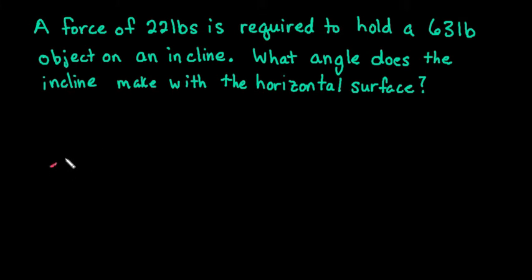The first thing we want to do is draw a picture to represent our incline surface. Our incline surface would be the hypotenuse of a right triangle. So we're trying to find this angle down here. I'm just going to call it theta.